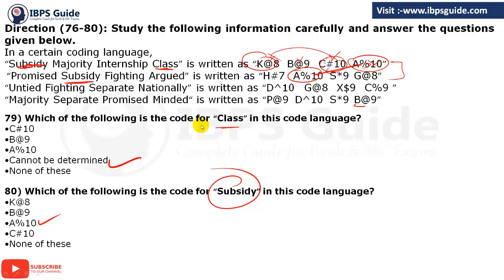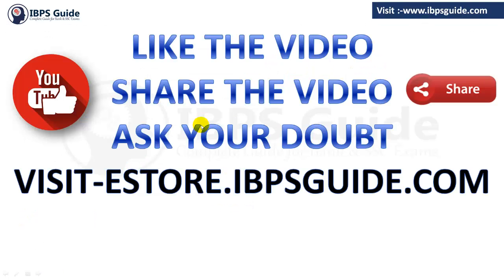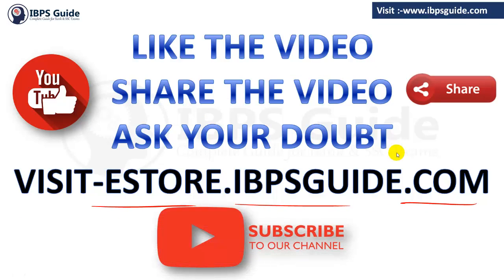That covers all 40 questions of the reasoning section from RRB Officer Assistant Mock Test 2. If you found this helpful, please like the video, share it with your friends, and visit e-store.ipaceguide.com for quality mock test series. Don't forget to subscribe to our channel. Thank you so much — keep watching and keep learning.